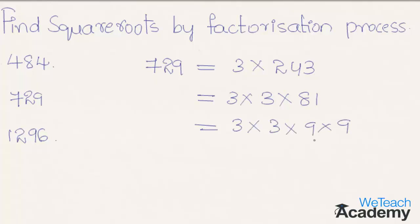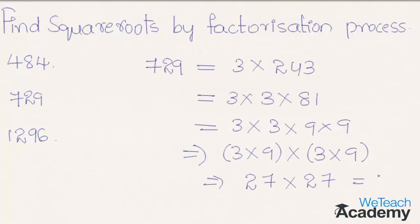Now let us group these factors and make them equal pairs. This can be written as 3 × 9 into 3 × 9, that is 27 × 27, which is equal to 27 squared. So the square root of 729 is 27.